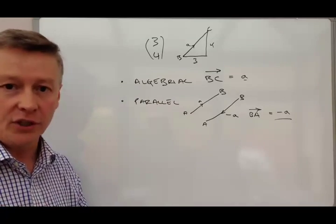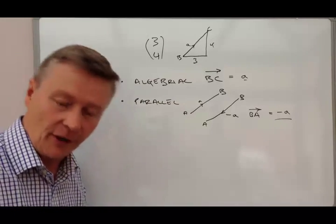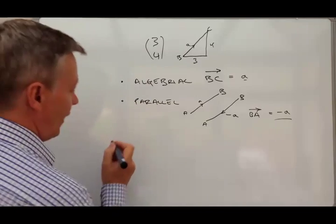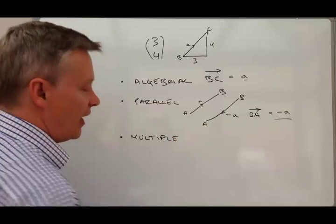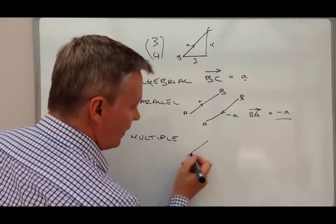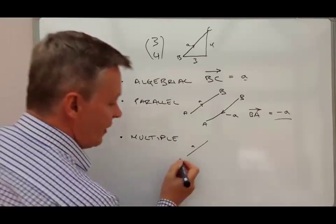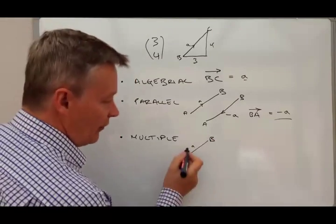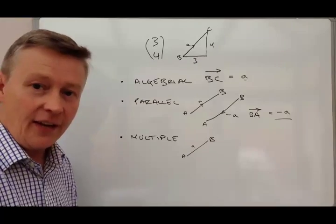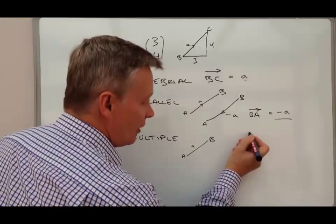And the other thing that we look at is what we call multiple. So let's say we have this vector A again, and let's say it's that length, it's going from A to B and it's that length. Well, if this is a value of A, if it's twice as long as that and parallel in the same way as it is there, then this is what they call 2A.